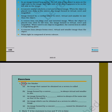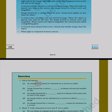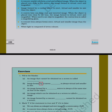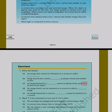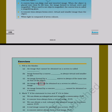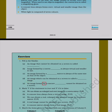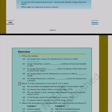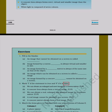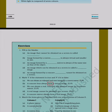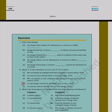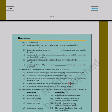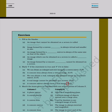Exercises 1. Fill in the blanks: (a) An image that cannot be obtained on a screen is called a virtual image. (b) Image formed by a convex mirror is always virtual and smaller in size. (c) An image formed by a plane mirror is always of the same size as that of the object. (d) An image which can be obtained on a screen is called a real image. (e) An image formed by a concave lens cannot be obtained on a screen. 2. Mark T if the statement is true and F if it is false: (a) We can obtain an enlarged and erect image by a convex mirror. (b) A concave lens always forms a virtual image. (c) We can obtain a real, enlarged and inverted image by a concave mirror. (d) A real image cannot be obtained on a screen. (e) A concave mirror always forms a real image.